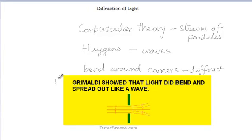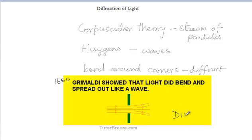In 1660, an Italian physicist called Francisco Grimaldi identified diffraction. He showed that a beam spread slightly outward after passing through a narrow aperture, and gave this phenomenon the name by which it is known today — diffraction. And this is our topic for discussion today.